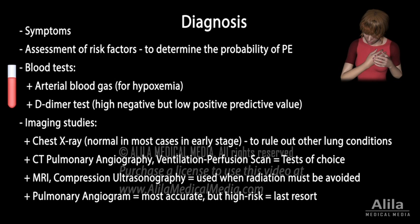Pulmonary angiogram, which involves insertion of a catheter into pulmonary arteries, is the most accurate way to diagnose pulmonary embolism, but it is a high-risk procedure and usually done only as a last resort.